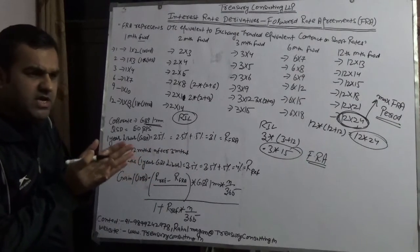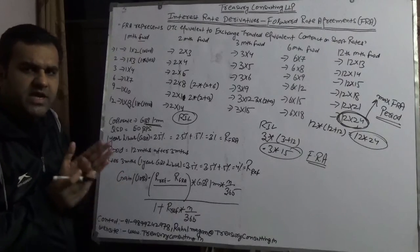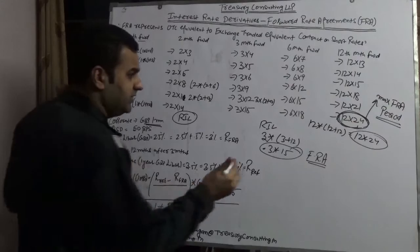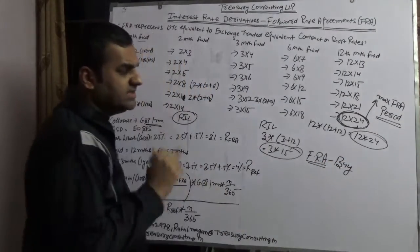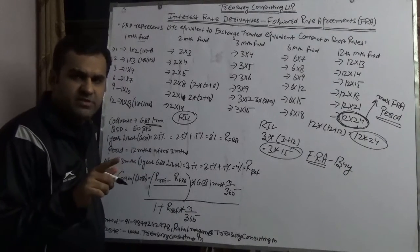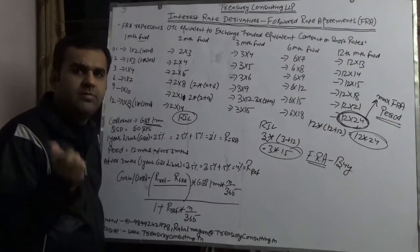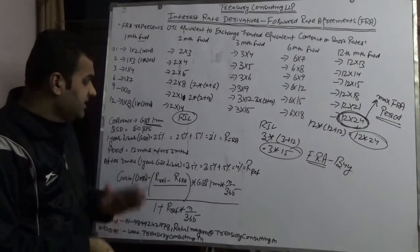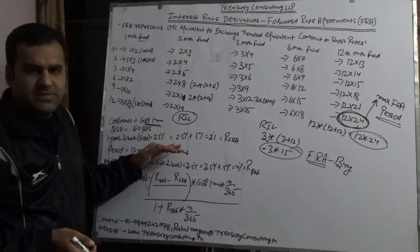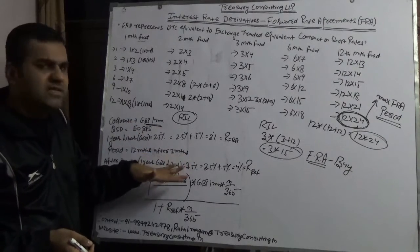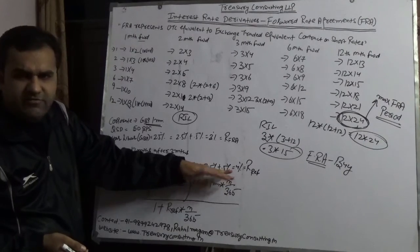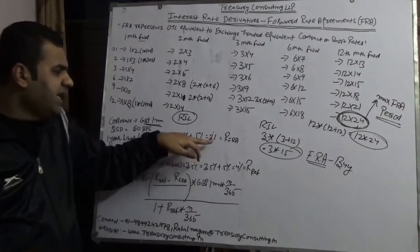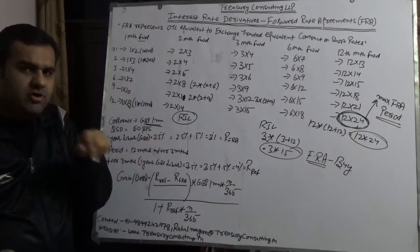Reliance enters into a buy FRA for the period 3x15 — starting in three months for twelve months. After three months, one-year GBP LIBOR has indeed risen to three and a half percent. Had they not taken this position, their borrowing cost would be 3.5% + 0.5% = 4%. But since they hedged, they are locked in at three percent.